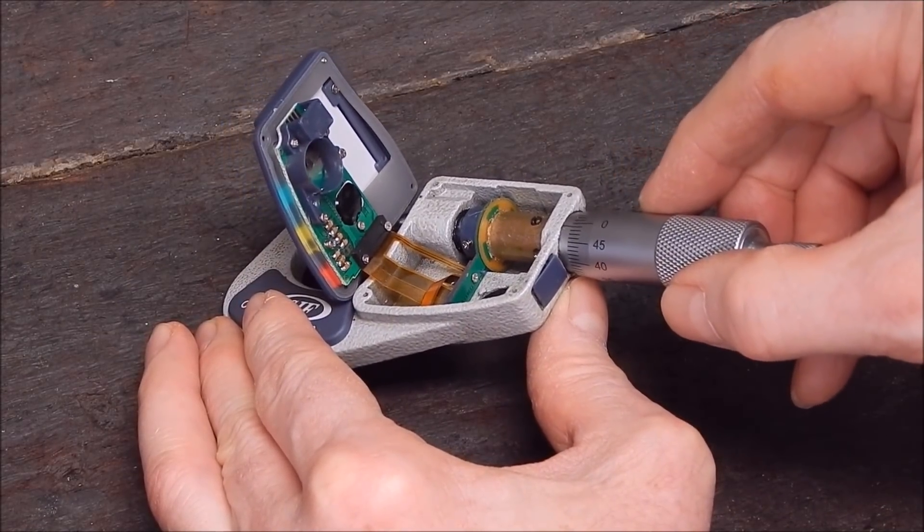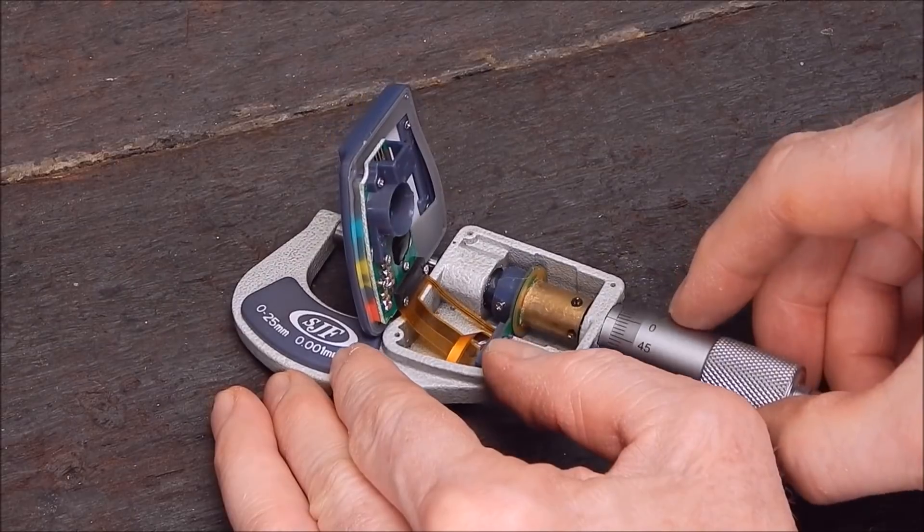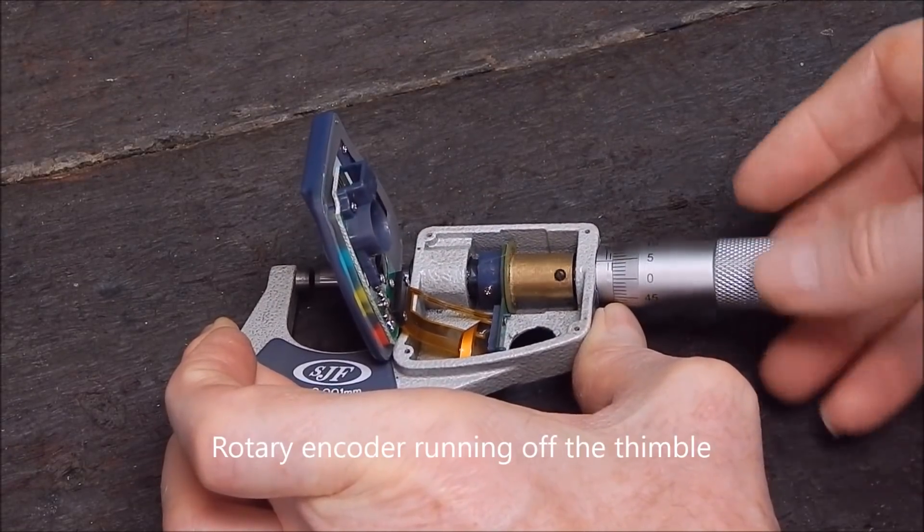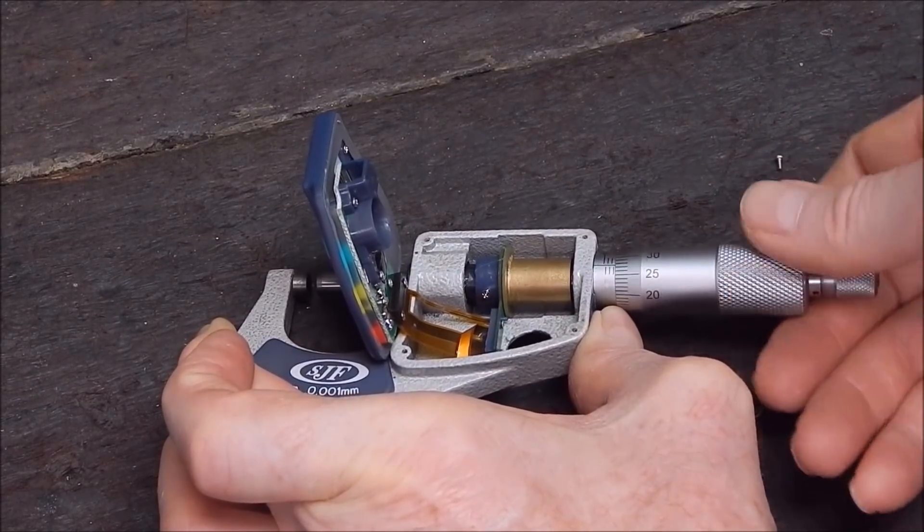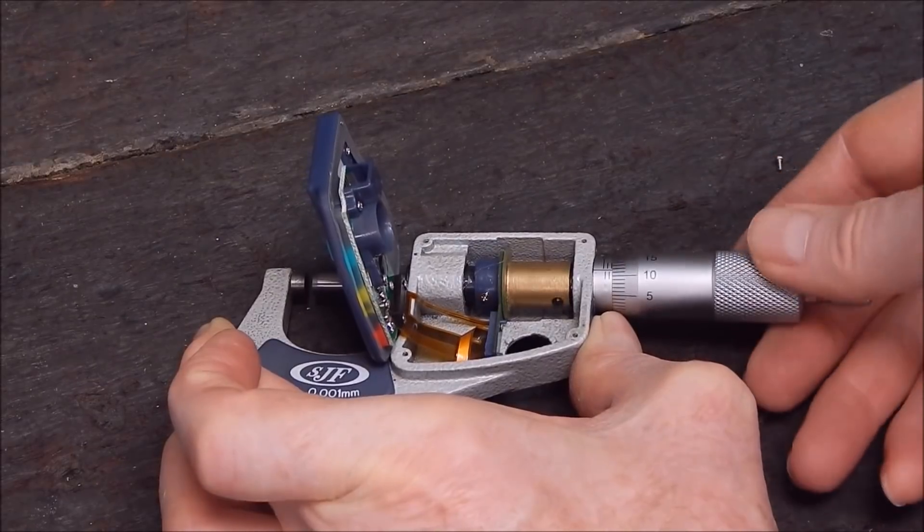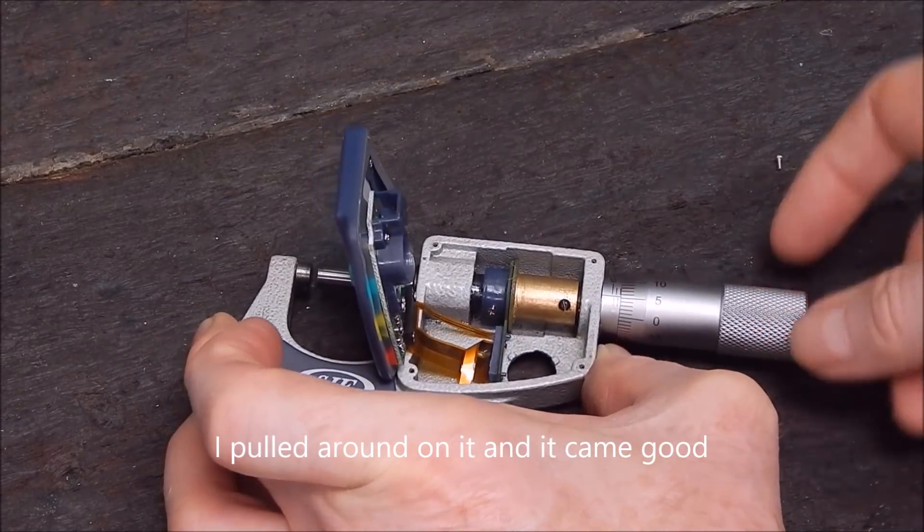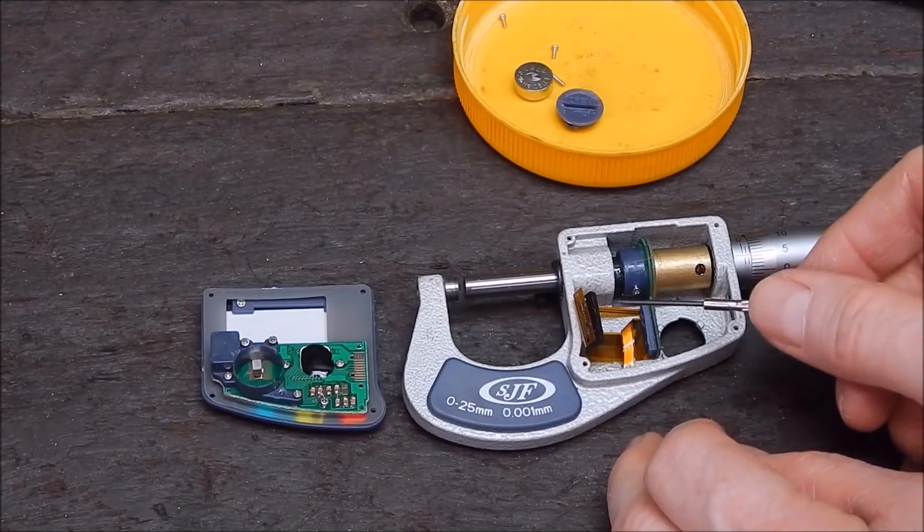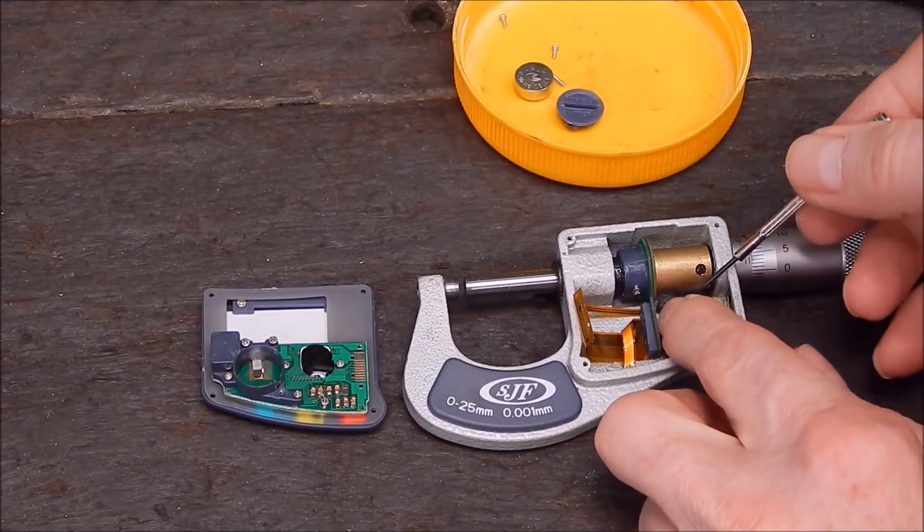Let's see what's in there. Little circuit board. It's the battery holder. It's stiffer than it used to be.